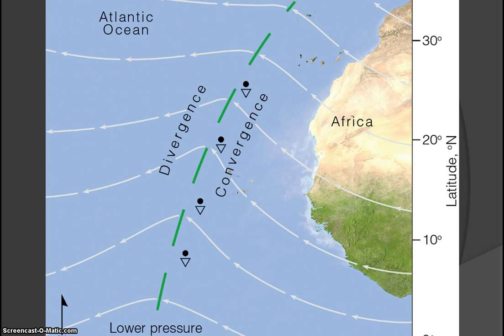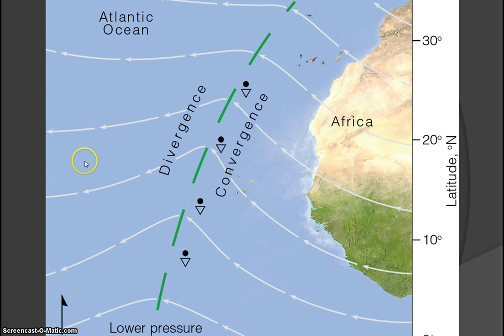Here's a look off the African coast at what we call a tropical wave. Unlike the northern hemisphere where systems move from west to east, these move from east to west. They often come off the African continent — the shape and location of the continent actually helps trigger these waves to form off the coast. You get divergence ahead of them and convergence on the back side, where we have the showers and thunderstorms.